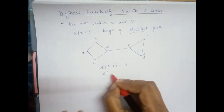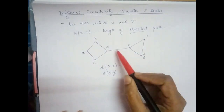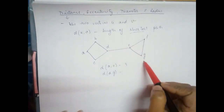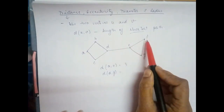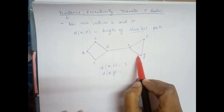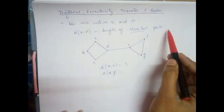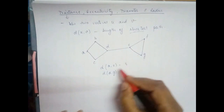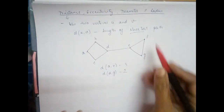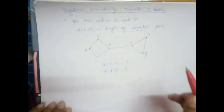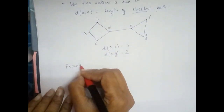Similarly, to find the distance between vertex d and g: one path is d to e, e to f, f to g — covering 3 edges. But if we go d to e and then e to g, we only traverse 2 edges. Since distance is the length of the shortest path, the distance between d and g is 2.